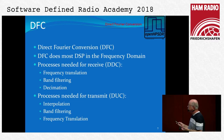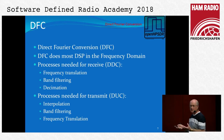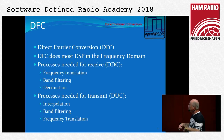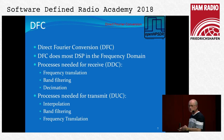First we need to do frequency translation — select the frequency band we want to receive. We then need to band-filter to just select the signals we're interested in. Finally we need to decimate to bring it down to a sampling rate suitable for audio demodulation or digital mode demodulation. We can also use Direct Fourier Conversion in reverse and do digital up-conversion to make a transmitter using the same process — starting with low sample rate audio or digital data, interpolating up, filtering, and then doing a frequency translation to the desired RF frequency.